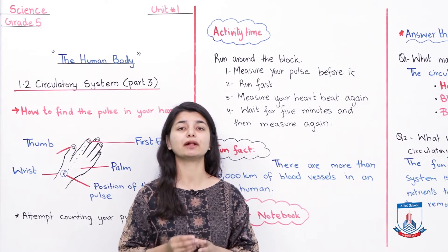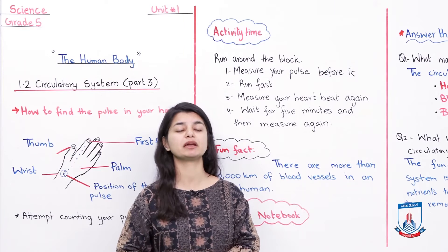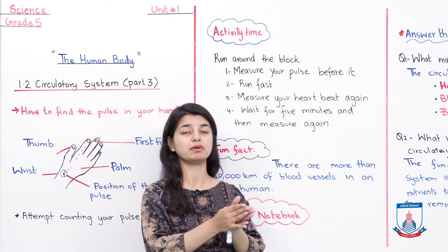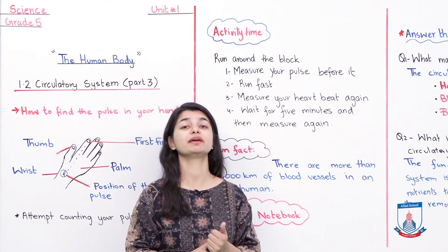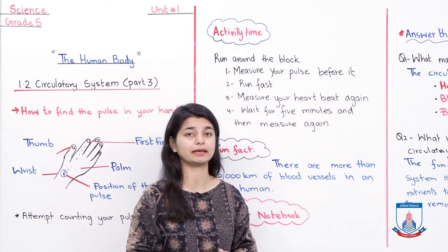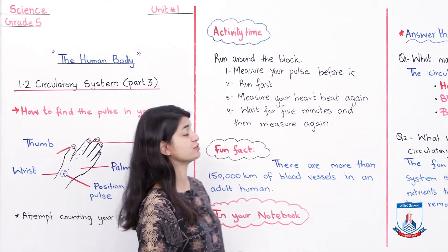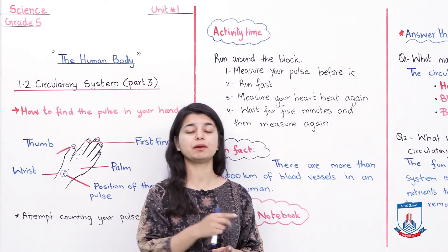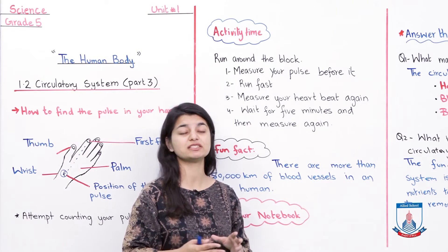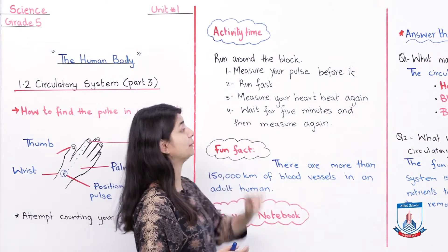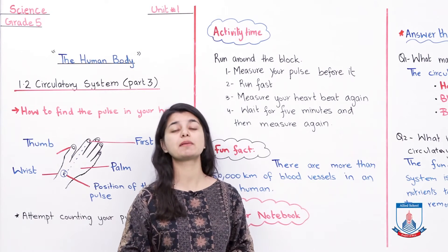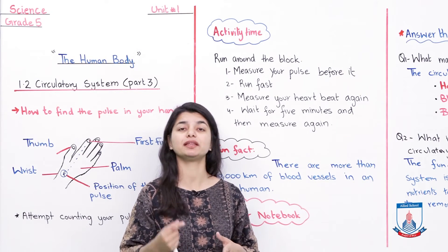When you calculate the number of pulse beats in a 30 second or 1 minute time slot, you then have to run around the block. You have to see how many times your pulse moves and count it. Run fast. After that, run around the block — somewhere on the street, on the block — and then measure your heartbeat again. Check your pulse again in a 30 second or 1 minute time slot.